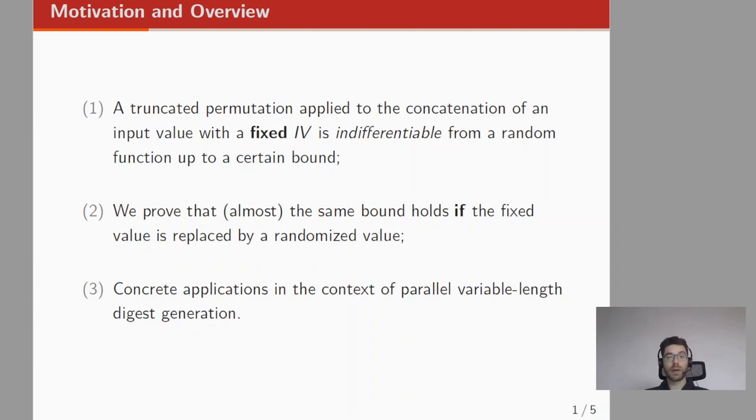A very brief motivation and overview of this work. It is well known that a truncated permutation applied to the concatenation of an input value with a fixed initial value is indifferentiable from a random function up to a certain bound. In this paper we proved that almost the same bound holds if the fixed value is replaced by a randomized value.